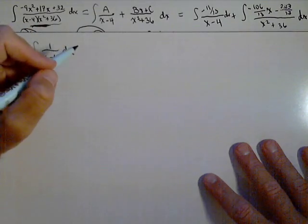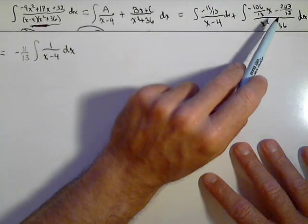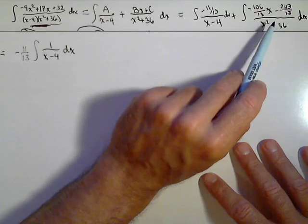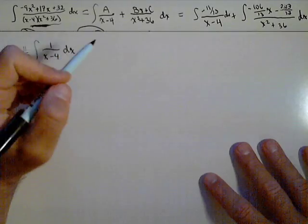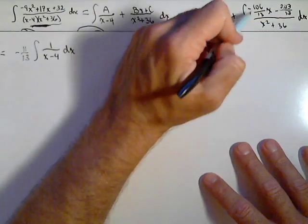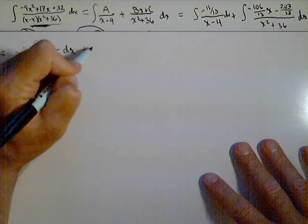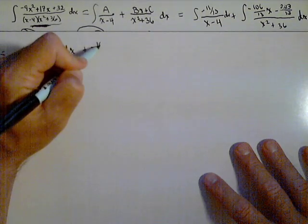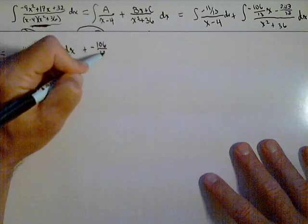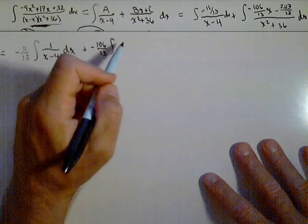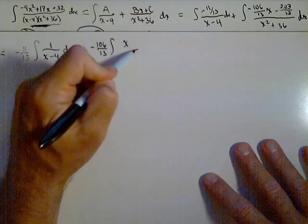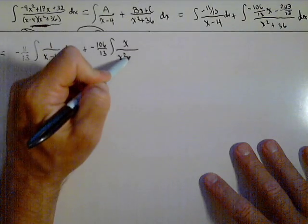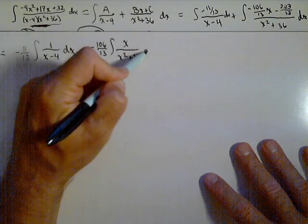Now, what I'm gonna do in this second integral is I'm gonna split it up into two integrals to make it easier to deal with. So the first one, and I'm gonna pull out the constant, so plus a negative 106 over 13 times the integral of x over x squared plus 36 dx.